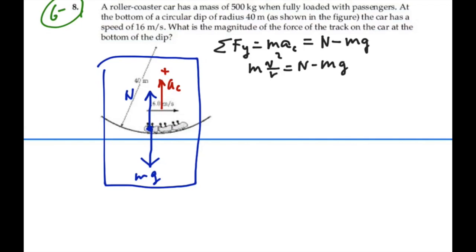Add an mg to both sides, and then we'll get the normal force by itself. So the normal force will equal mass times velocity squared over r, plus mg. It's actually going to be greater than the weight.